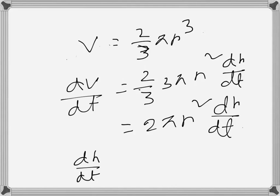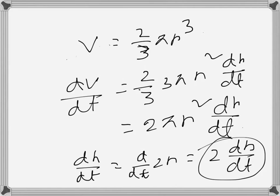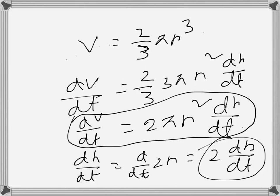Since h = 2r, taking d/dt of both sides gives dh/dt = 2 dr/dt. This is what we need to find out. We can rewrite this equation.